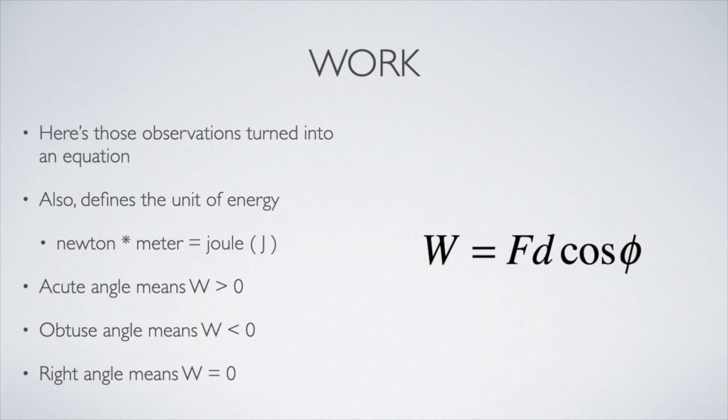With this equation, we can determine what the unit would be for energy. Work is the transfer of energy, so it has the same units as energy. We have that the work is equal to the product of force units and displacement units - a newton-meter. That's given the derived unit name of joule, named after an english scientist who helped develop the idea of energy conservation. When the angle between the force and the displacement vectors is acute, we'll have a positive work and energy will flow into the system.